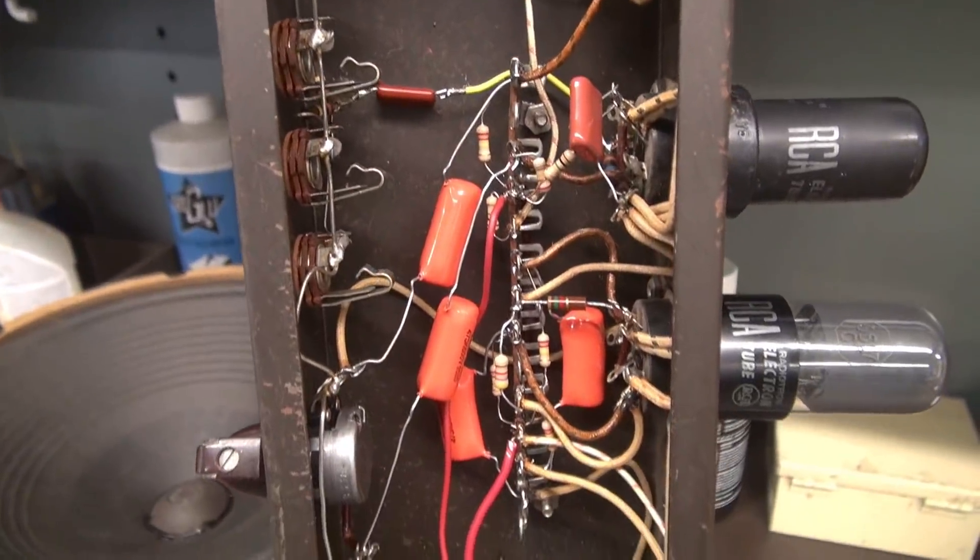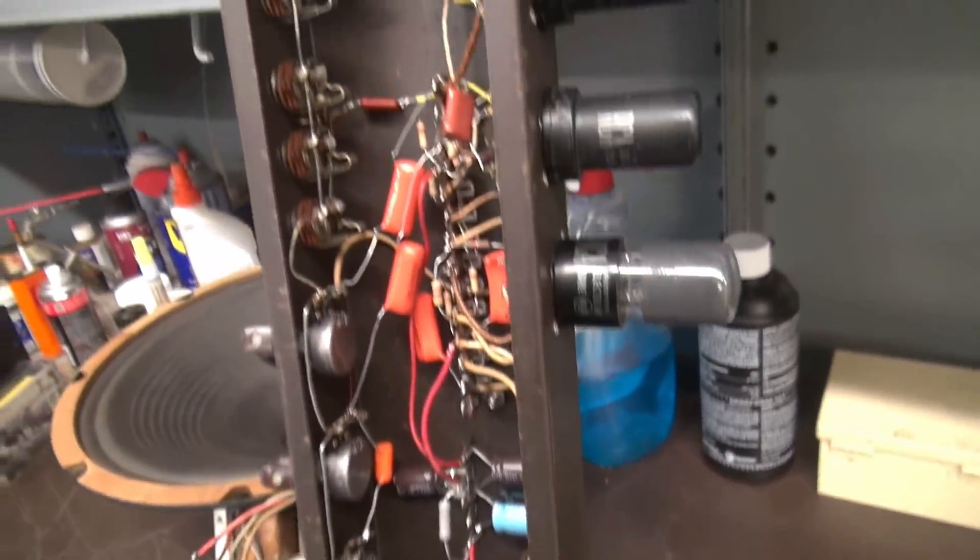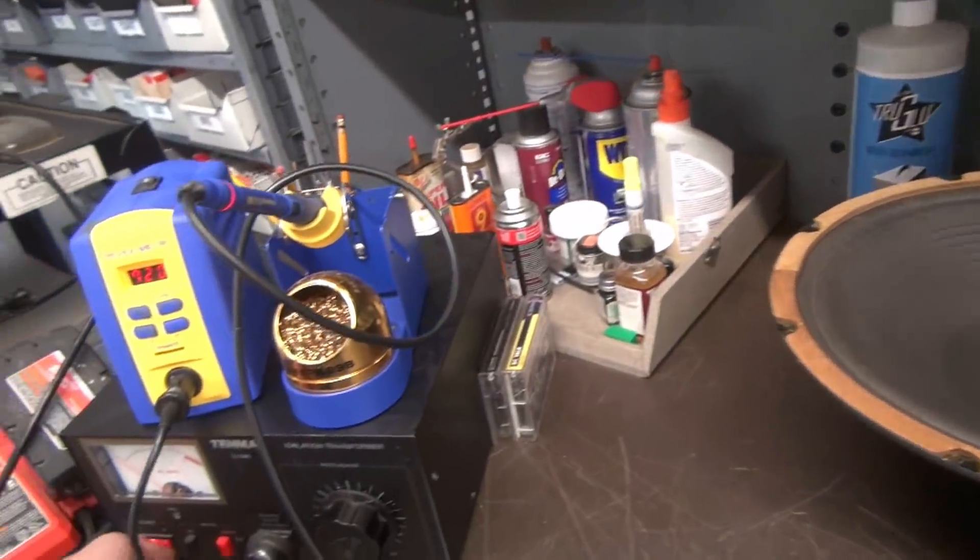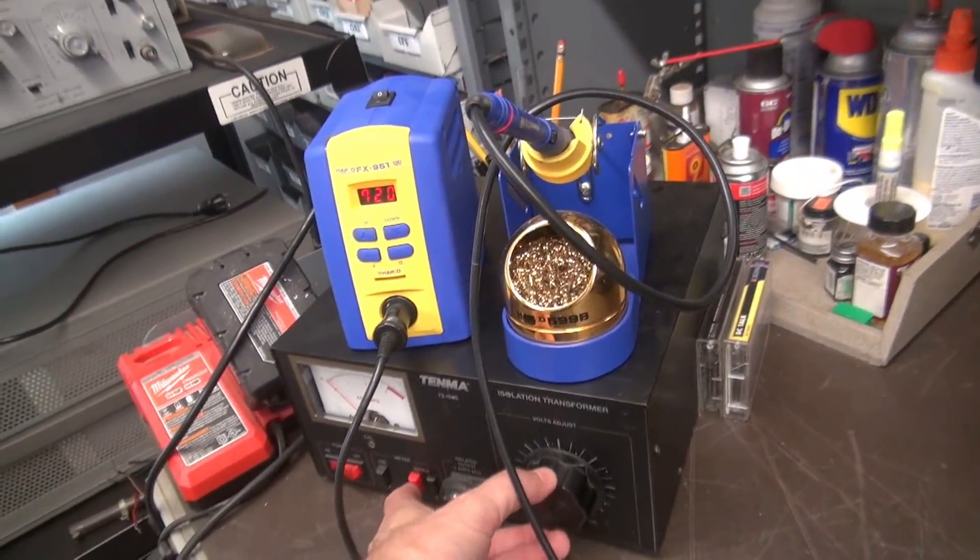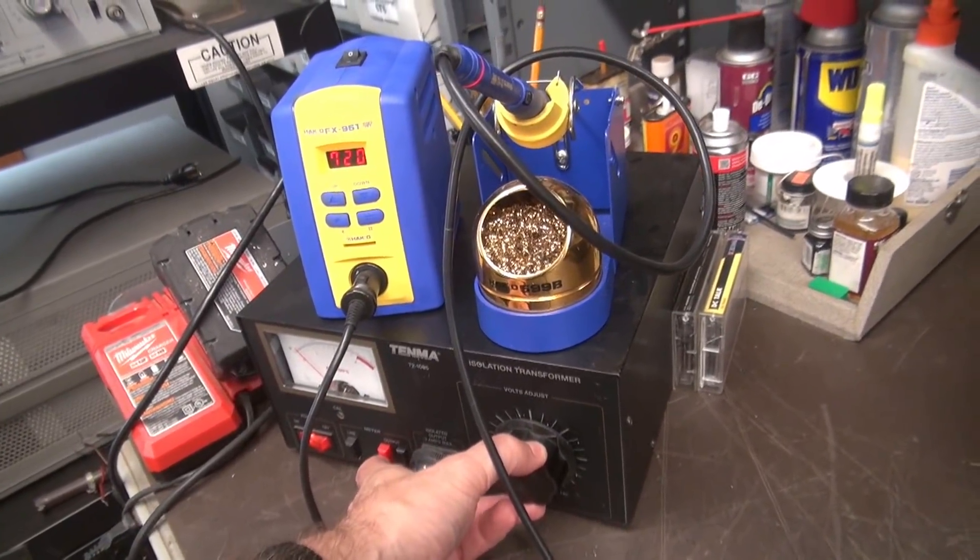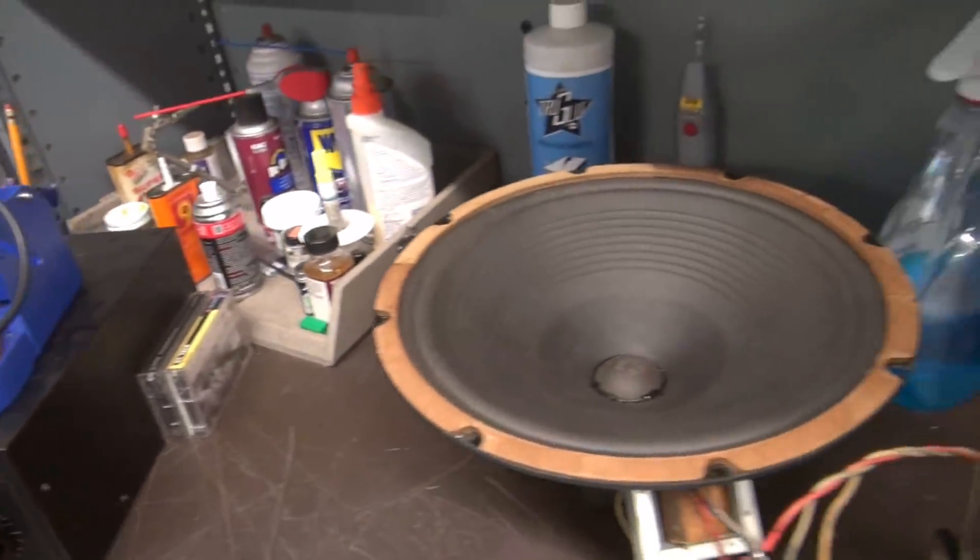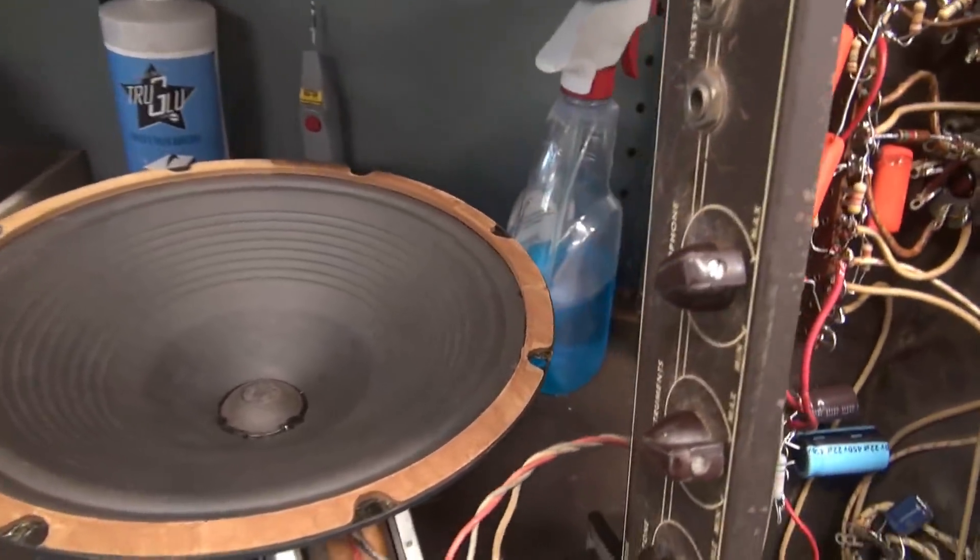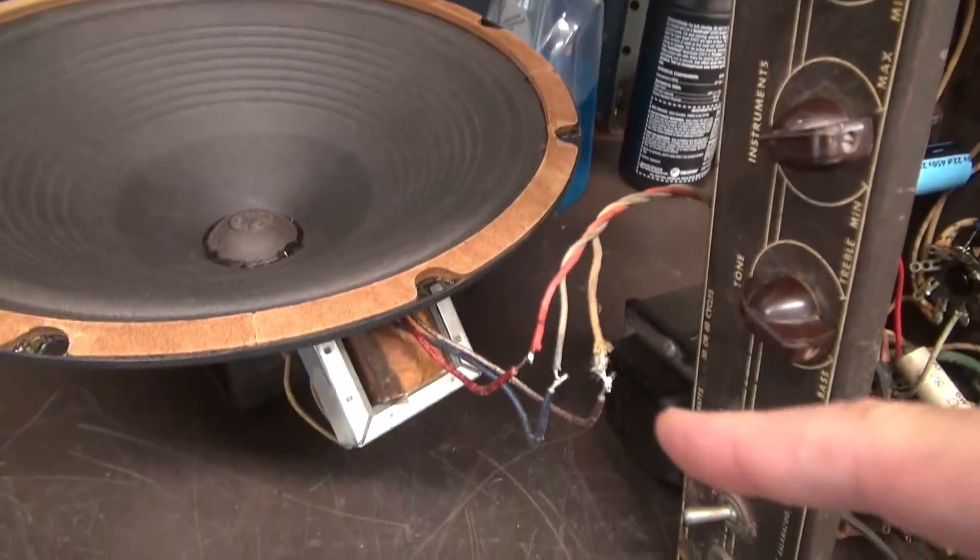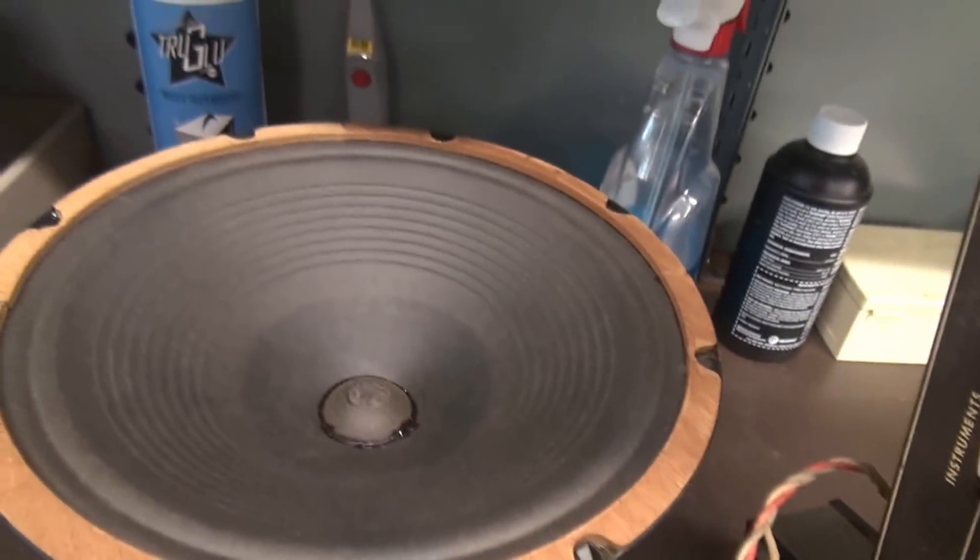So all the new resistors are installed on the terminal board. We still have the original tubes. I'm going to bring her up on a variac. Do a little wellness check here before we go any further. See if we've made any improvements. We still got the speaker hot wired so there's high voltage right there. You can hear a little hiss from the speaker.